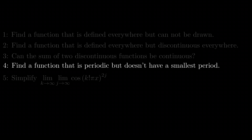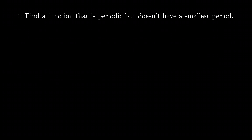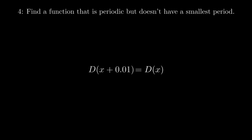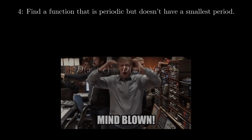How about the fourth one — is the Dirichlet function periodic? The answer is yes. For example, one is a period of the Dirichlet function: whether x is rational or irrational, d(x + 1) is always d(x). But also 0.01 is a period, and in fact any arbitrarily small rational number is a period of the Dirichlet function. So the Dirichlet function is periodic but has no smallest period.